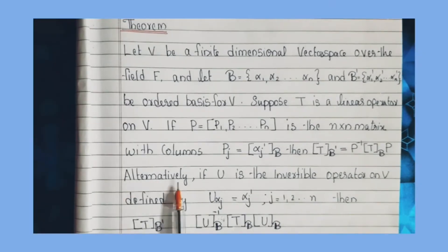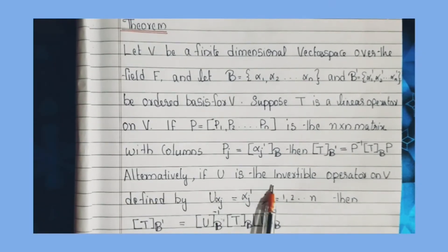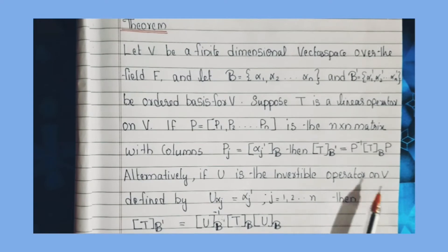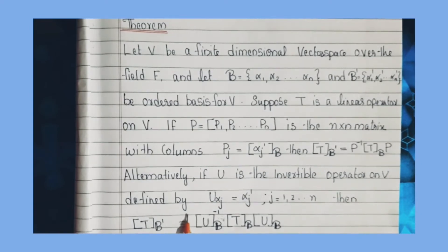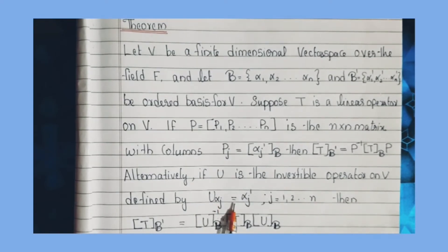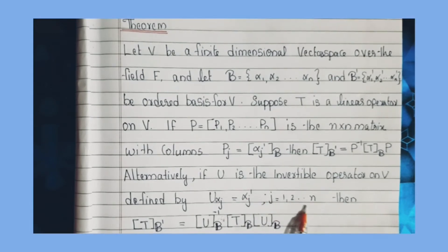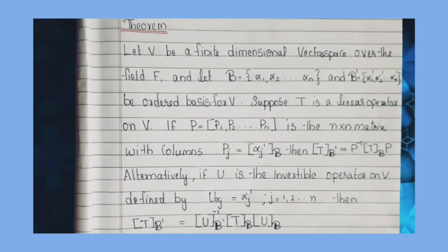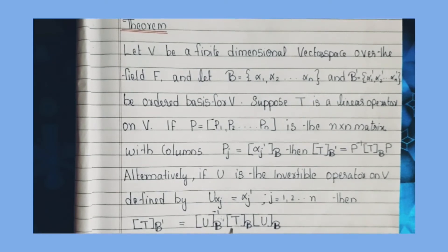Alternatively, if U is the invertible operator on V defined by U of alpha j equals alpha j', for j running from 1 to n, then the matrix of T related to B' is equal to the matrix of U inverse related to B, times the matrix of T related to B, times the matrix of U related to B.